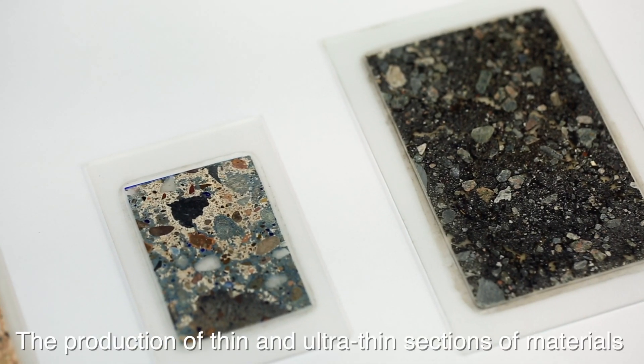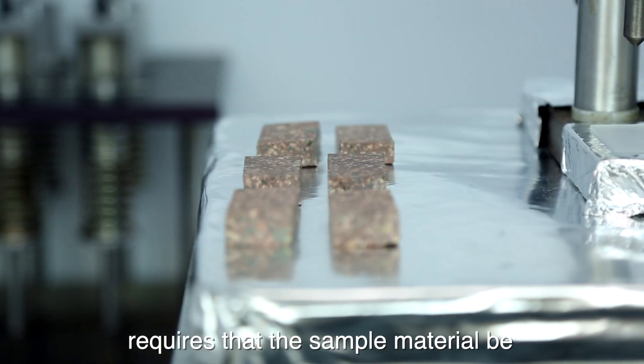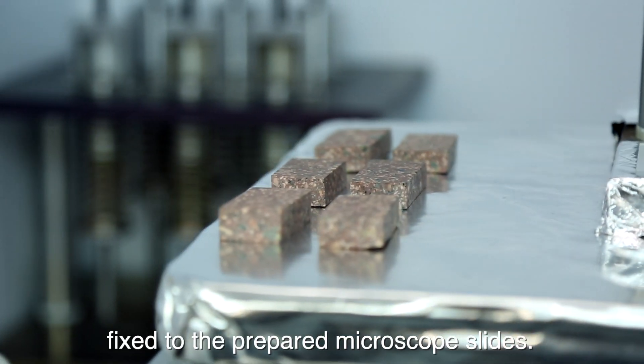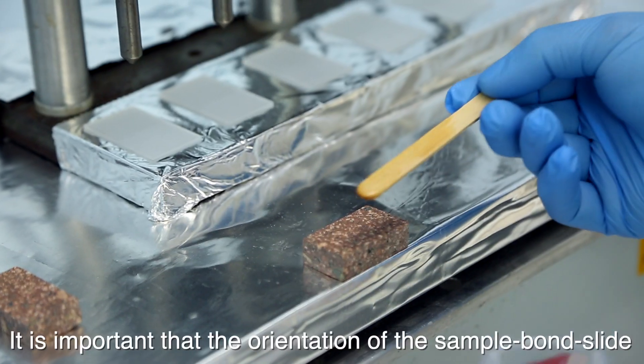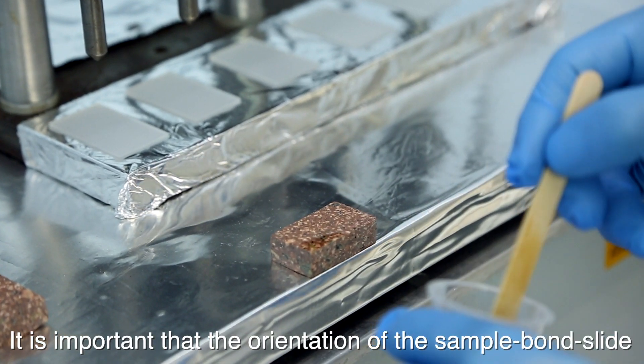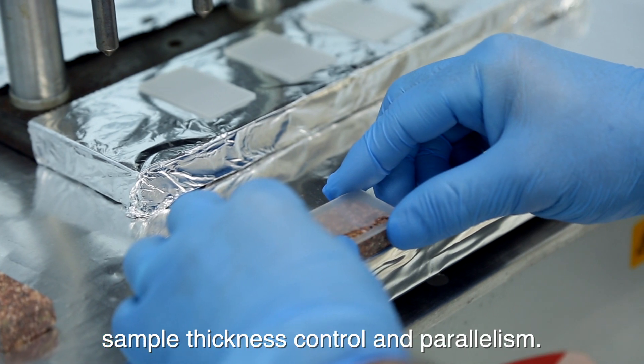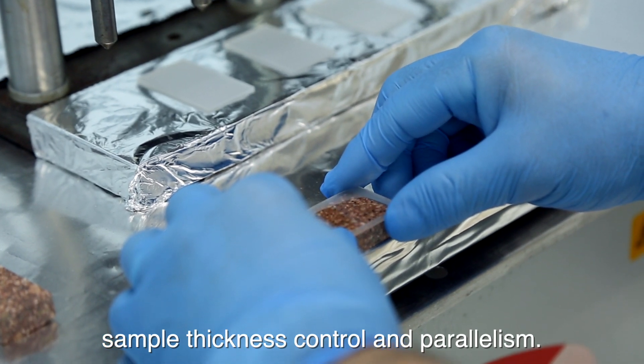The production of thin and ultra-thin sections of materials requires that the sample material be fixed to the prepared microscope slides. It is important that the orientation of the sample bond slide is controlled for achieving optimum sample thickness control and parallelism.